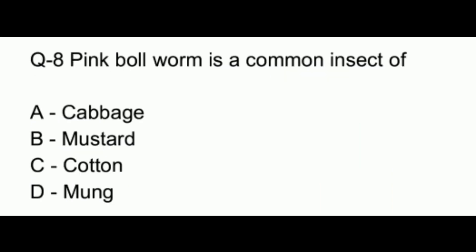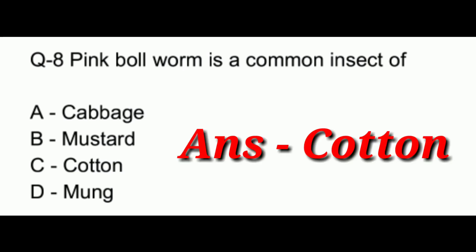Question number 8. Pink bollworm is a common insect of: option A, cabbage; option B, mustard; option C, cotton; option D, muck. The answer to this question is option C, which is cotton.